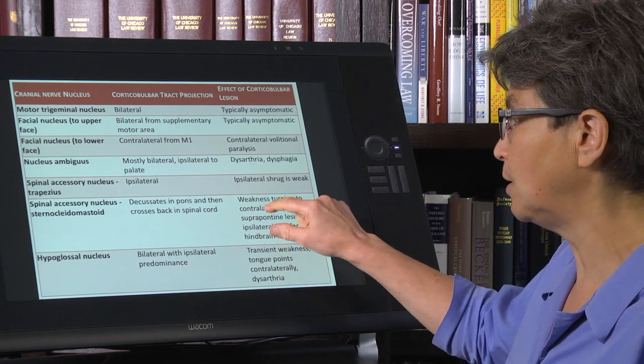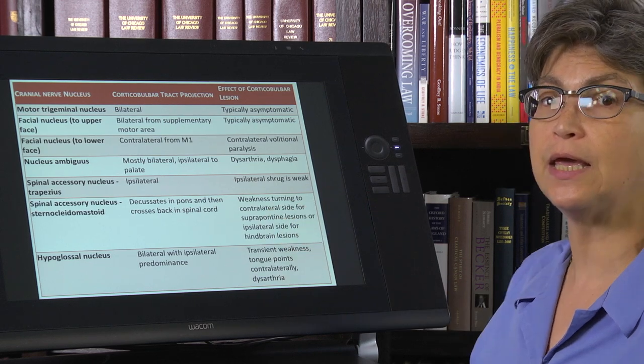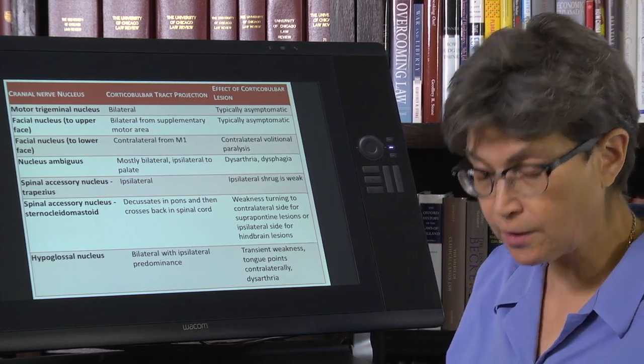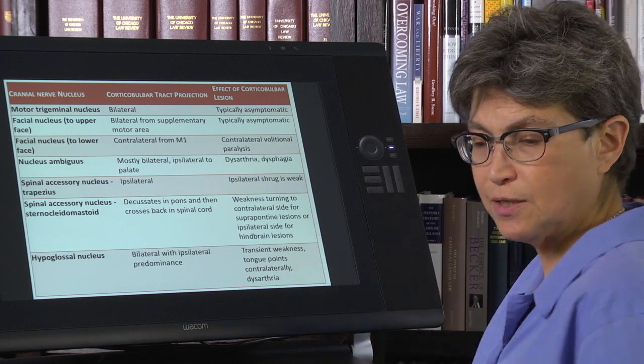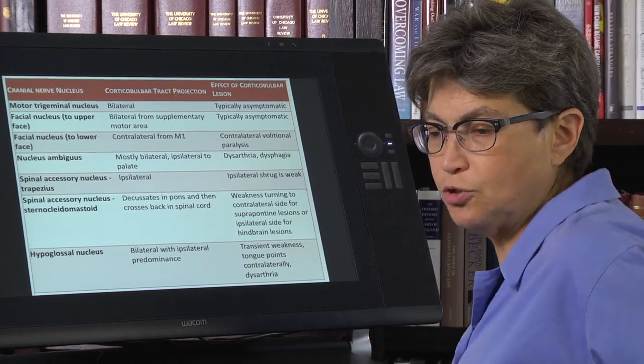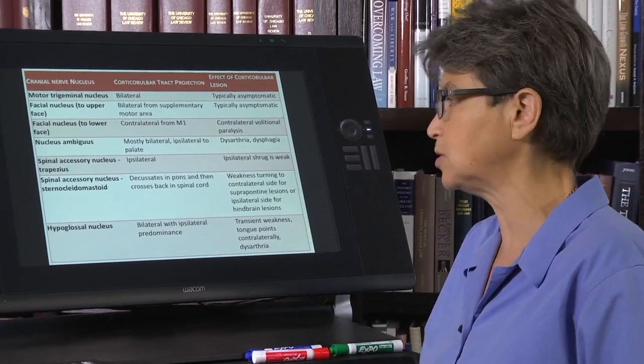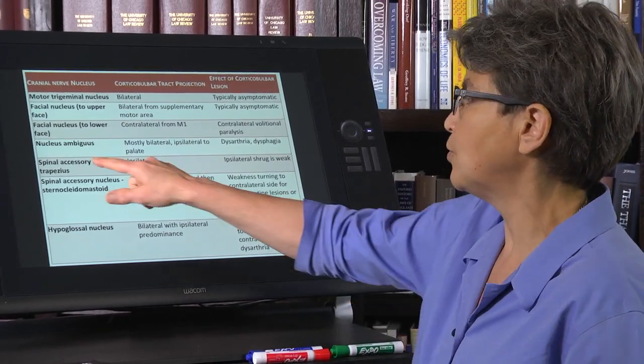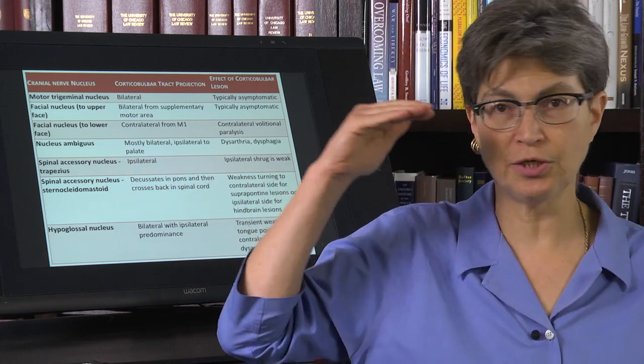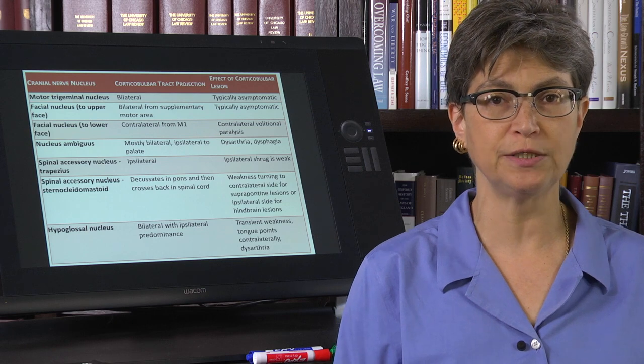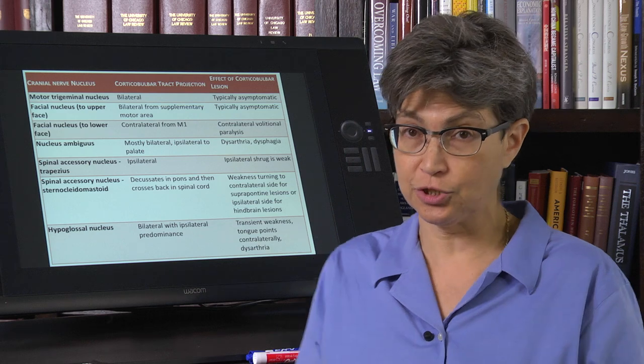The other thing that can happen with a lesion of the sternocleidomastoid is a winged scapula. It's not the most common cause of a winged scapula, but that can happen, which means the shoulder blade kind of sticks out - it's not tucked into place. With the trapezius, the innervation is ipsilateral, so a lesion of the corticobulbar tract will cause a deficit in shrugging on the same side as the lesion.